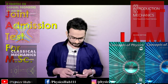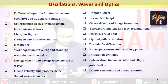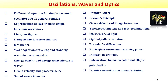The third section is Oscillations, Waves, and Optics. Topics include: differential equations for simple harmonic oscillator and its general solution, superposition of two or more harmonic oscillators, Lissajous figures, damped and forced oscillations, resonance, wave equation, traveling and standing waves in one dimension, energy density and energy transmission in waves, group velocity, phase velocity, sound waves in media, Doppler effect, Fermat's principle, general theory of image formation, thick and thin lenses, lens combinations, interference of light, optical path retardation, diffraction, resolving power, diffraction gratings, polarization, linear, circular, and elliptical polarization, double refraction, and optical rotation.